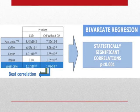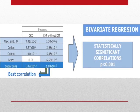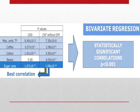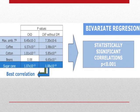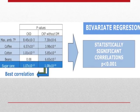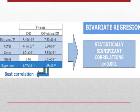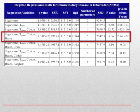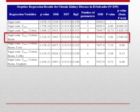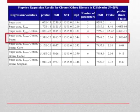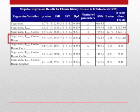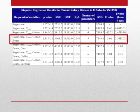Our data shows that from regression of the different variables, chronic kidney disease and chronic kidney failure are very well correlated with coffee, cotton, beans, and sugarcane, and also with the maximum ambient temperature. However, as shown in this graph, the best correlation according to the p-value is for sugarcane cultivation. For the stepwise regression — where variables are added one by one — the best regression includes sugarcane, temperature, cotton, and beans cultivation, which are the ones most correlated with kidney disease.